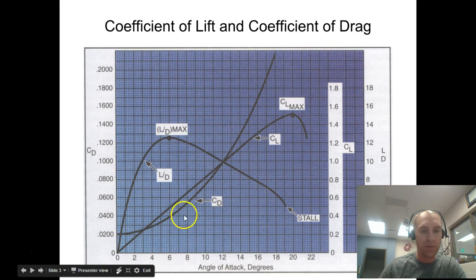So again, coefficient of drag is this curve, coefficient of lift is just a constant increase as we increase our angle of attack, and our lift versus drag is maximum right here around 6 degrees. I just wanted to show you a scale of the values you might expect when you do the calculations.